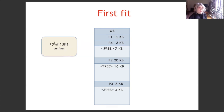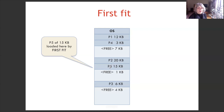Later, process P5 of 15 kilobytes arrives. We check the first free area — it is 7 kilobytes, which is smaller than the process, so P5 cannot be loaded there. We check the next one: it is 16 kilobytes, which is larger than the process, so this is the first fit region. P5 is loaded into this region. After P5 is loaded, only 1 kilobyte remains in that 16 kilobyte free area.